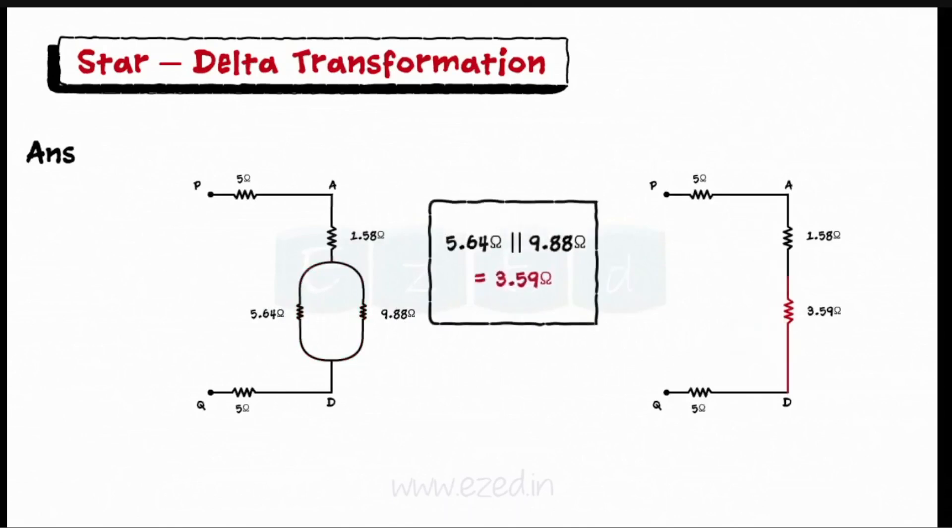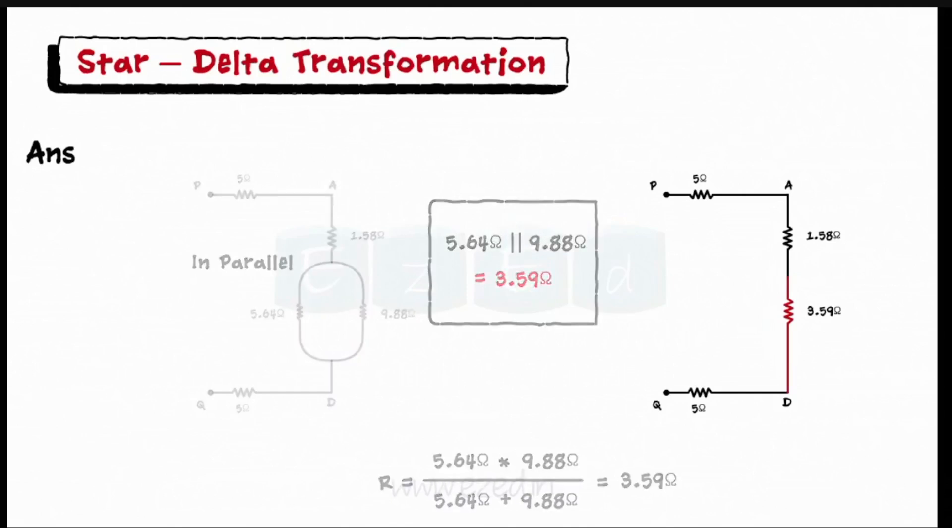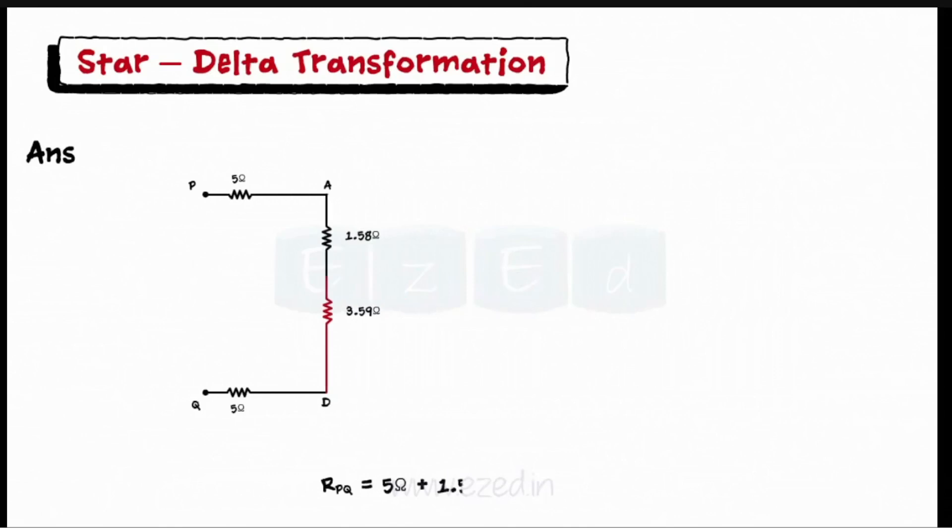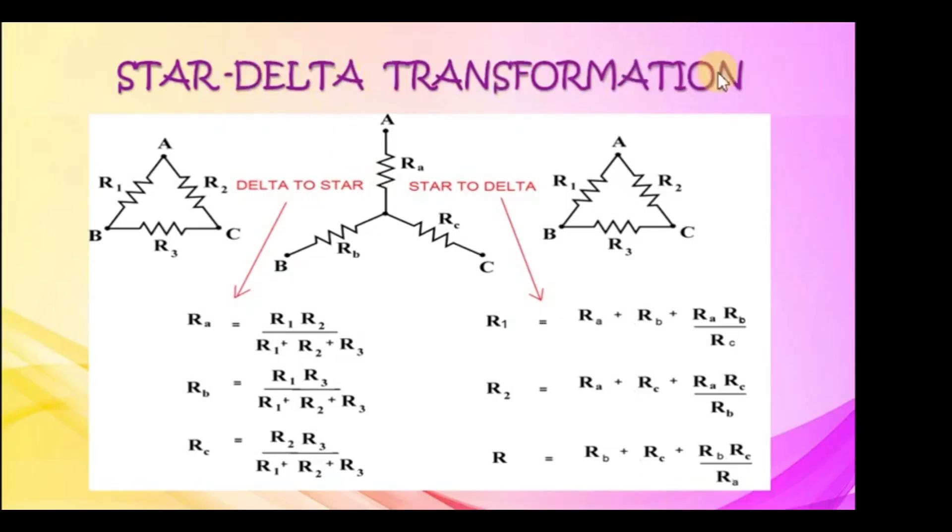These series equivalents are in parallel to each other, so it is further simplified using parallel rule. Finally, we have four resistances connected in series, so we can simply add them to find the equivalent resistance between P and Q.